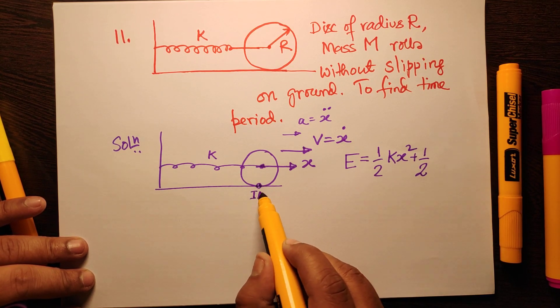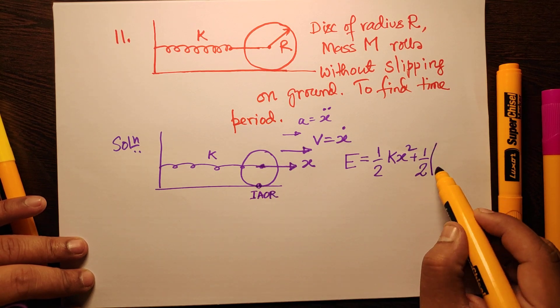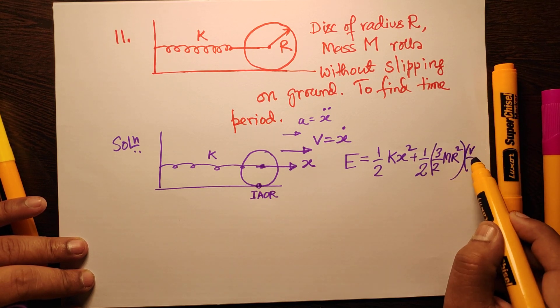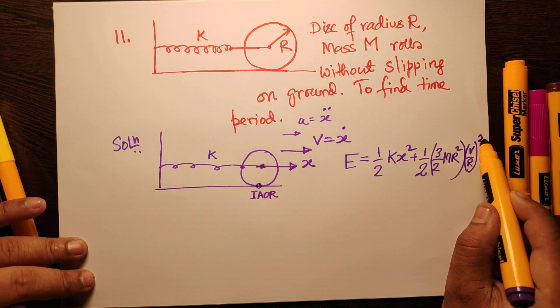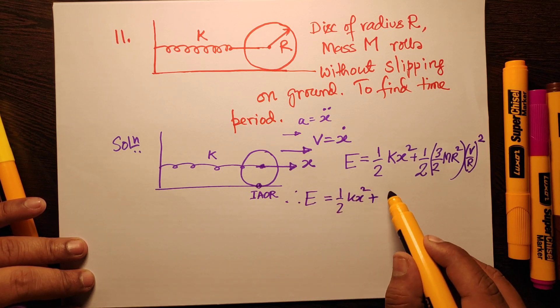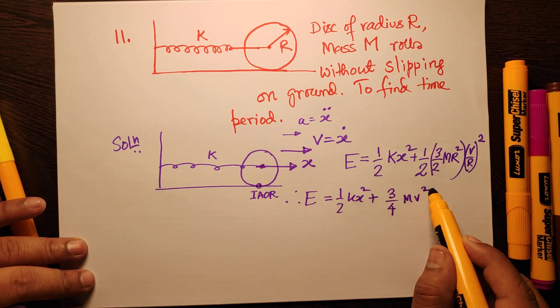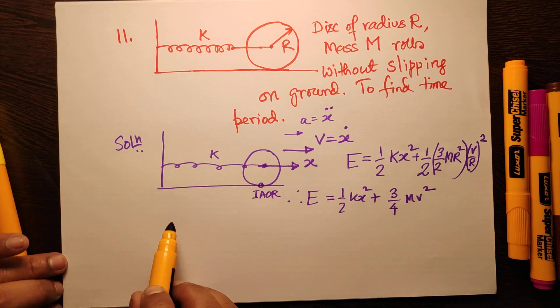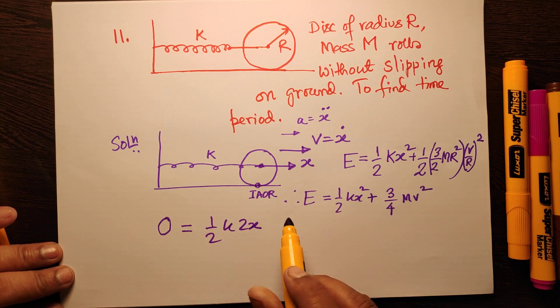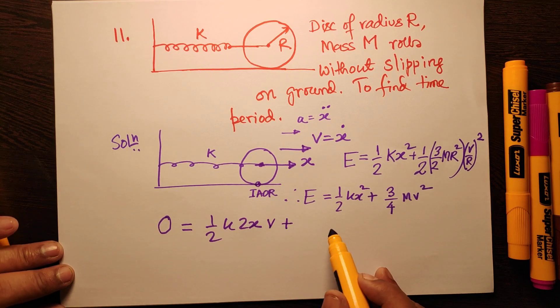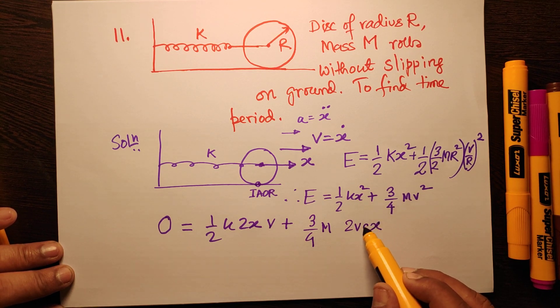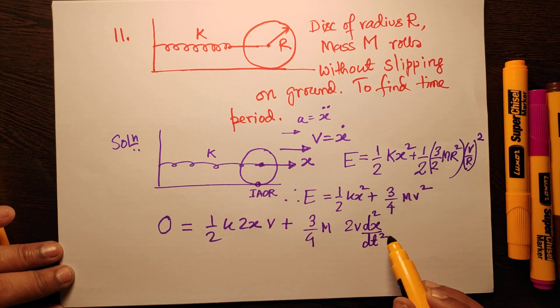This is the instantaneous axis of rotation. It is half - about the instantaneous axis it is (3/2)mR²·ω - omega is v/r squared. Therefore E equal to half kx² plus (3/4)mv². Now you can differentiate this expression with respect to time, so that 0 on the left side equal to half k·2x·ẋ - means v - plus (3/4)m·2v·(d²x/dt²).